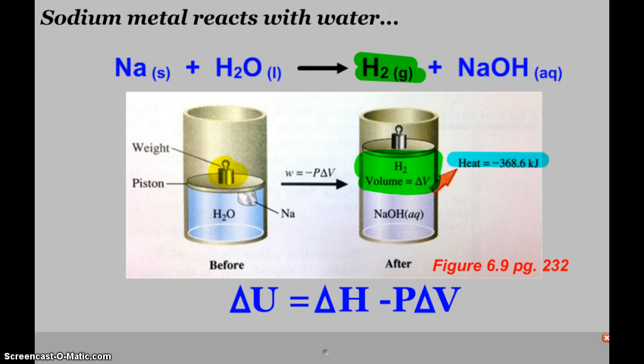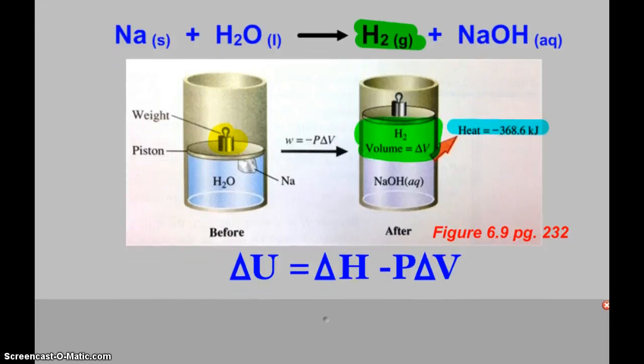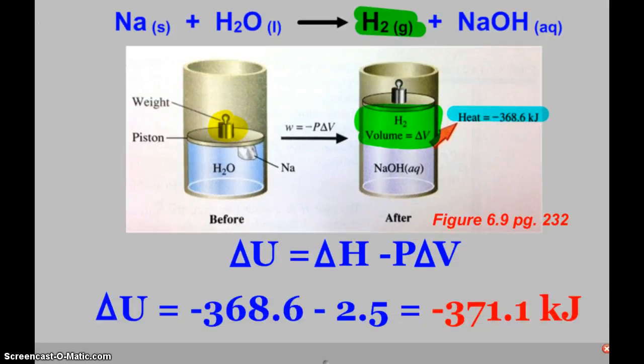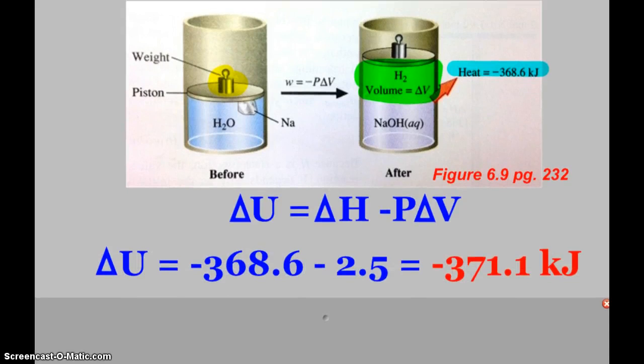Also note that negative 368.6 kilojoules means there's 368.6 kilojoules released. If I wanted to calculate the change in internal energy, it would be ΔU = ΔH - PΔV. In this case, ΔH is -368.6 kilojoules, and PΔV calculated from an experiment is 2.5 kilojoules. Ultimately, we see the change in internal energy is -371.1 kilojoules.